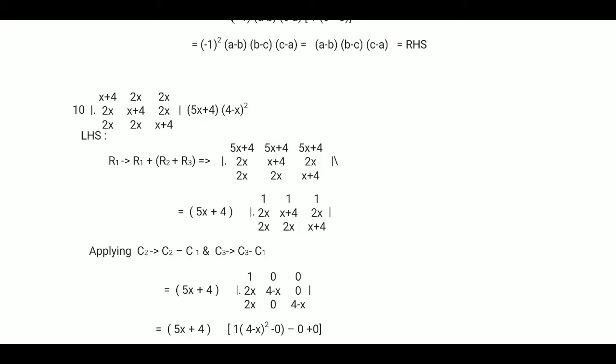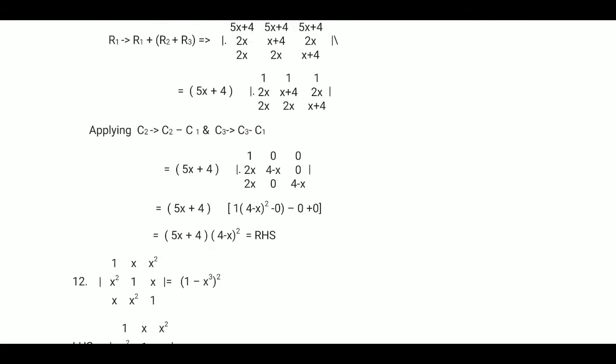Now in R1, (5x + 4) is the common element, so we take it outside. The determinant becomes (5x + 4) times a determinant with R1 as [1, 1, 1], R2 as [2x, x+4, 2x], R3 as [2x, 2x, x+4]. R2 and R3 remain the same. To make maximum zeros, we fix column 1 and subtract C1 from C2, and subtract C1 from C3. Column 2 changes: 1 minus 1 = 0, (x+4) minus 2x = (4 minus x), 2x minus 2x = 0.